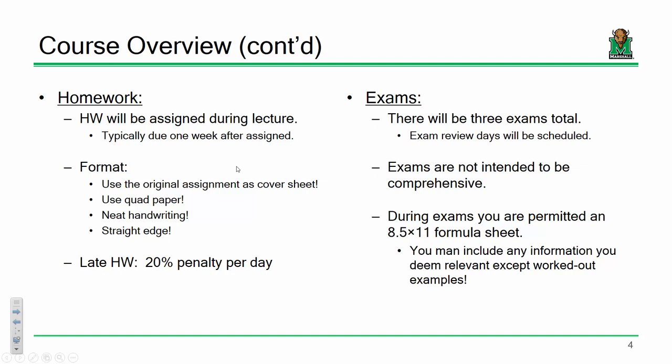I don't do comprehensive exams — I'm not a fan of it. That said, there are a few topics that you need to understand moving forward, like stress and strain — it's going to show up on every test. For your exams, I allow you to use an 8.5 by 11 formula sheet. You can put whatever you want on it except worked-out examples. That's probably not a big deal since a lot of this class is about procedures, methods, and general facts about civil engineering materials.